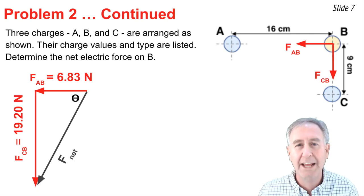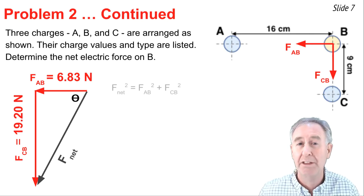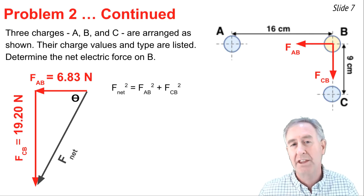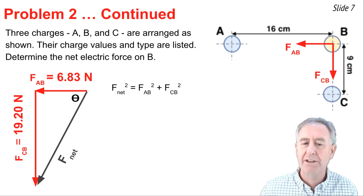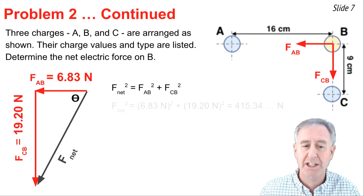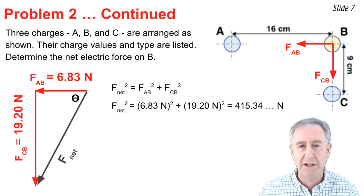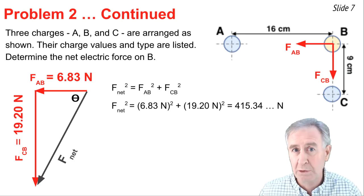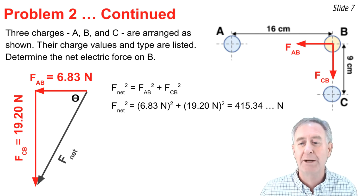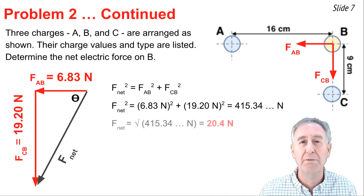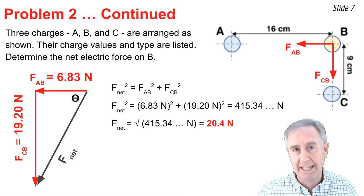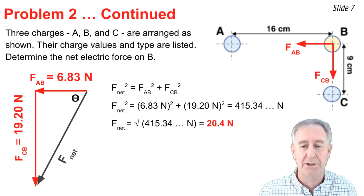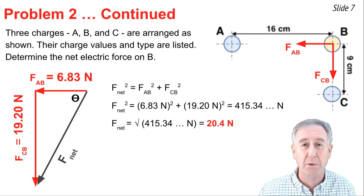So when we add right angle vectors we would use Pythagorean theorem to add them which says that the hypotenuse squared is equal to the individual legs squared summed together. And so I have 6.83 and I have 19.20 and I square each and I add them together and that's equal to the hypotenuse squared. Comes out to be 415.34 and some change. If I take the square root of both sides I'm calculating the net electric force. The length of the hypotenuse. And it's about 20.4 Newtons.